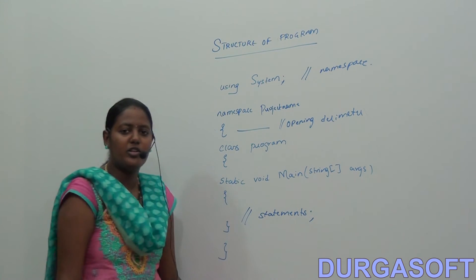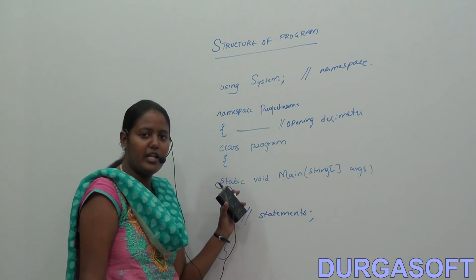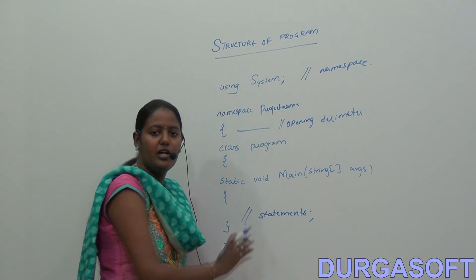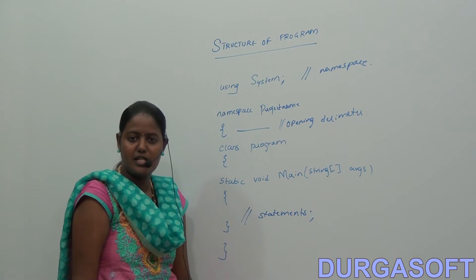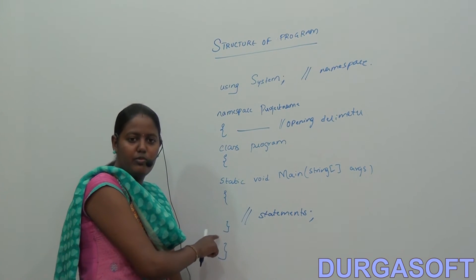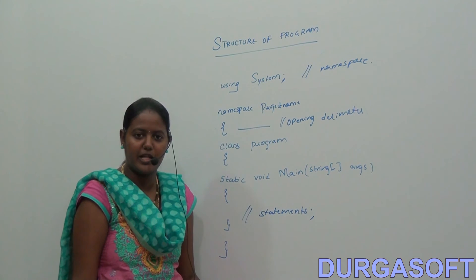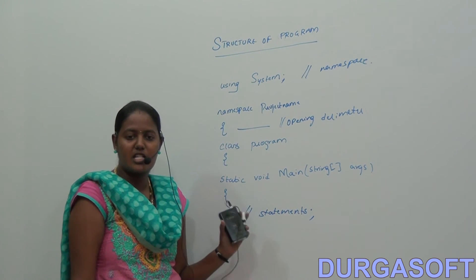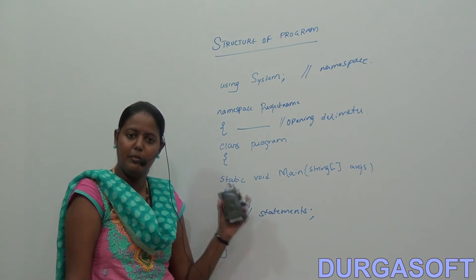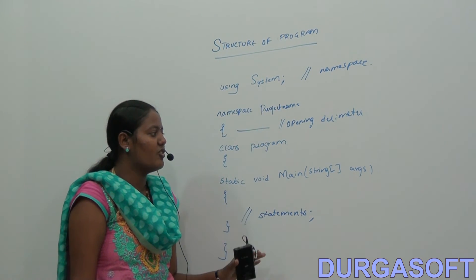The entry point of the application starts from the main method. The opening delimiter of the main method is the entry point of the application. And the exit point is where the main method closes — that is the exit point of our application.